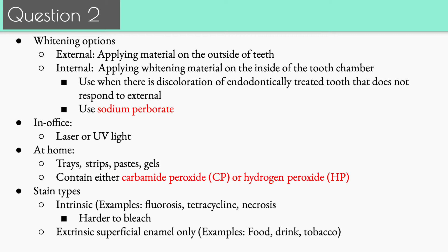For staining types: intrinsic stains include fluorosis — from too much fluoride exposure in childhood — tetracycline staining, and pulp necrosis causing tooth discoloration. These are very hard to bleach and do not go away easily. Sometimes internal bleaching will work, sometimes it won't. Extrinsic superficial staining is simpler — examples include food, wine, coffee, and tobacco. These are more easily addressed with at-home options, in-office bleaching, or external bleaching in general.